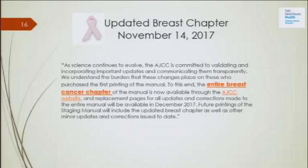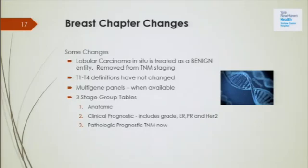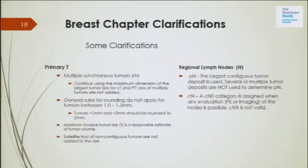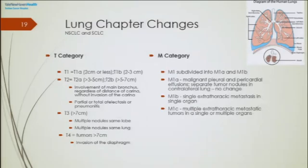I'm not going to go through all the chapters, but here are some examples of changes. In breast, LCIS is now no longer TNM stageable — but the cancer registry continues to report those cases. There are also clarifications on synchronous tumors, which have become quite complicated, with a lot of information in the breast chapter. The lung chapter has T category changes, and the M category has been subcategorized.